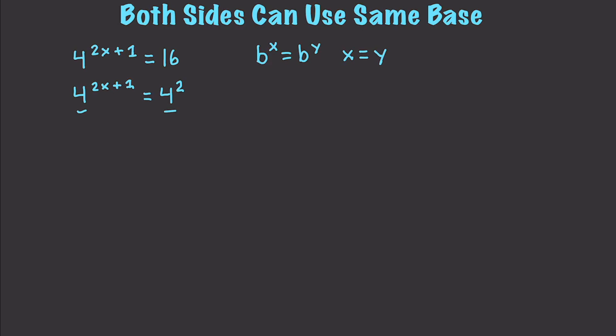What we can simply do to solve this problem is take 2x plus 1 and set it equal to 2. Then we subtract 1 from both sides, giving us 2x equals 1, or x equals 1/2. So we went from a really complicated-looking problem to an extremely easy solution.